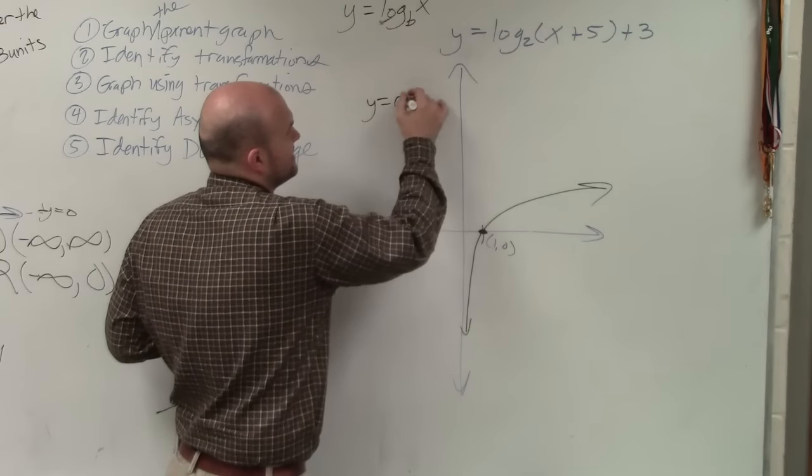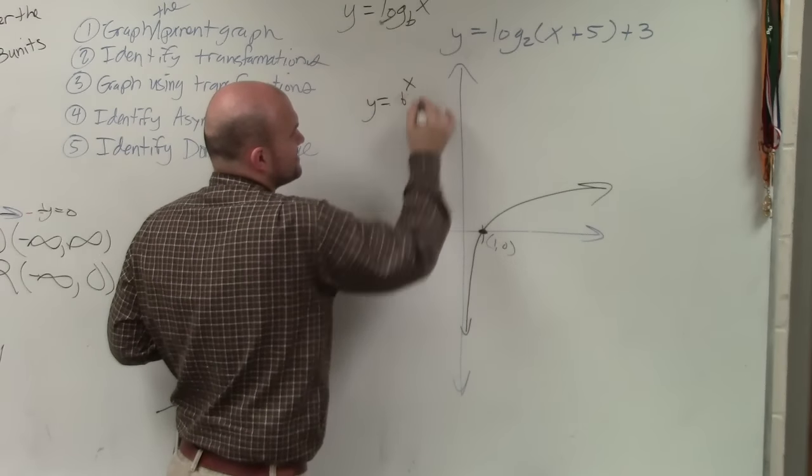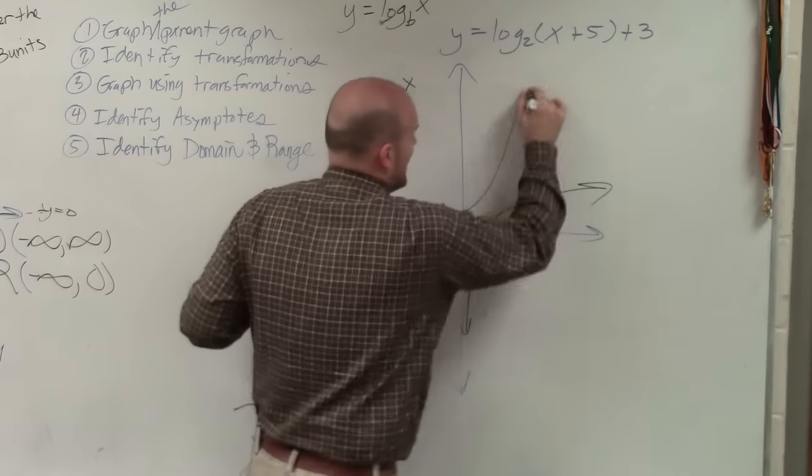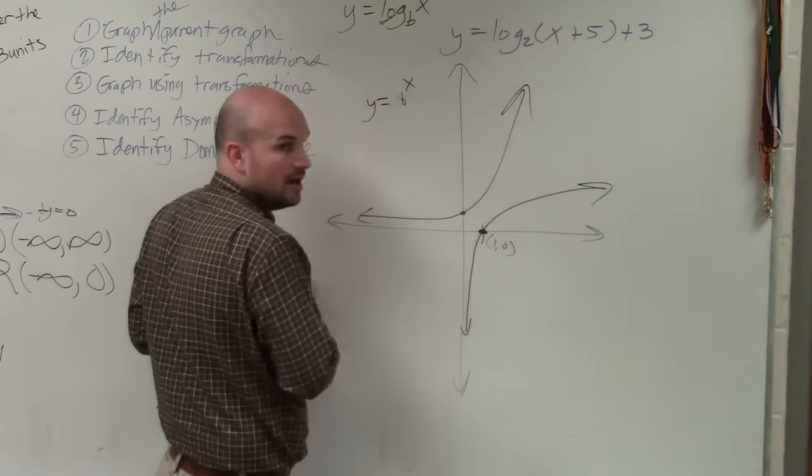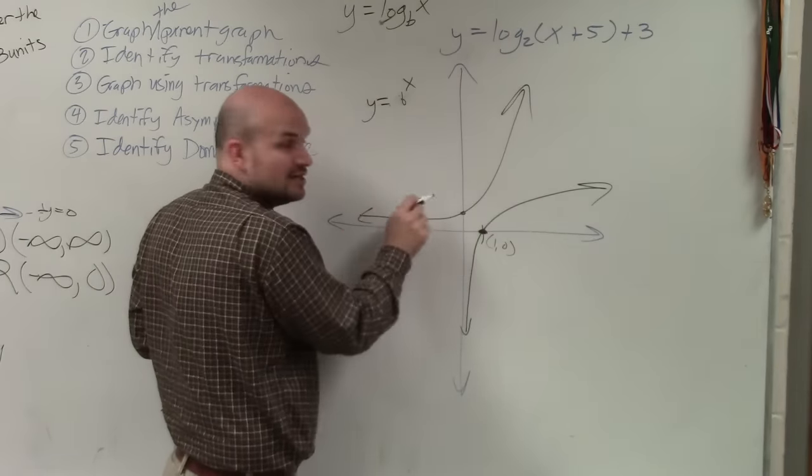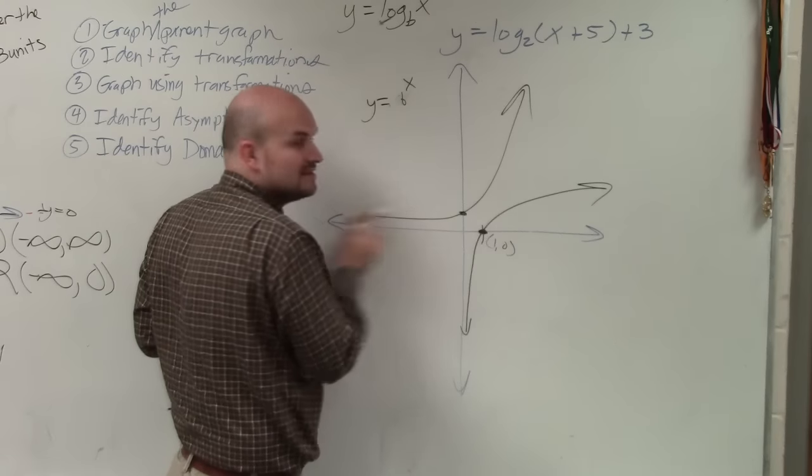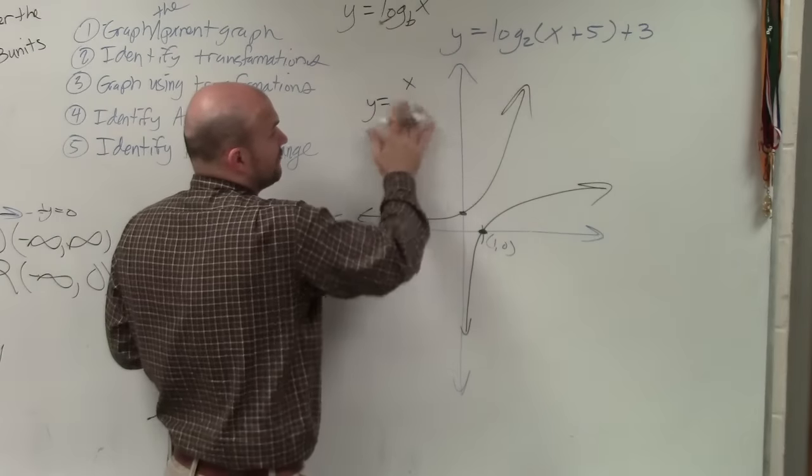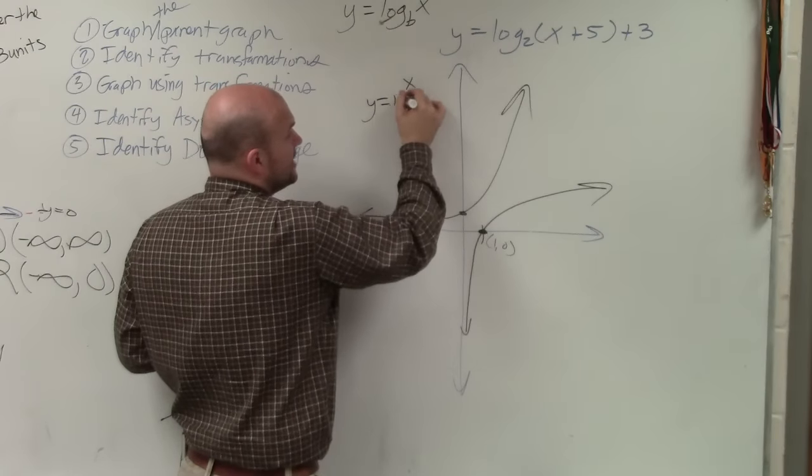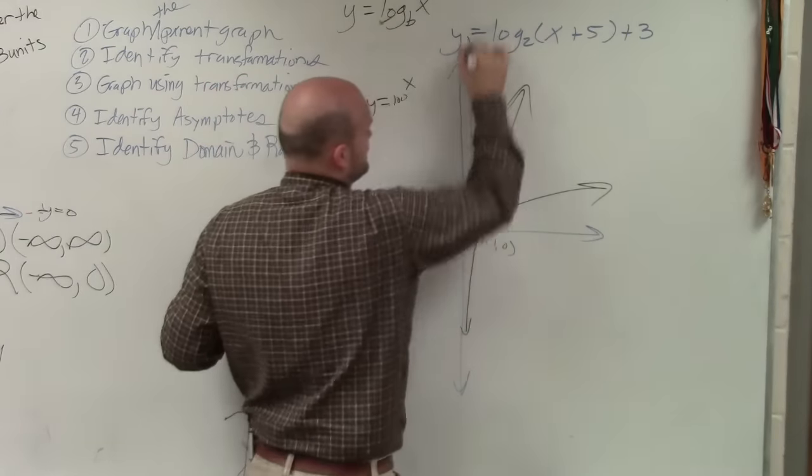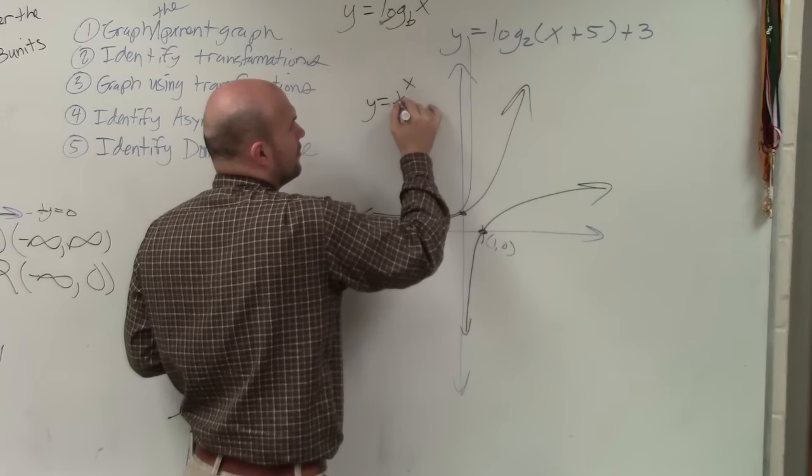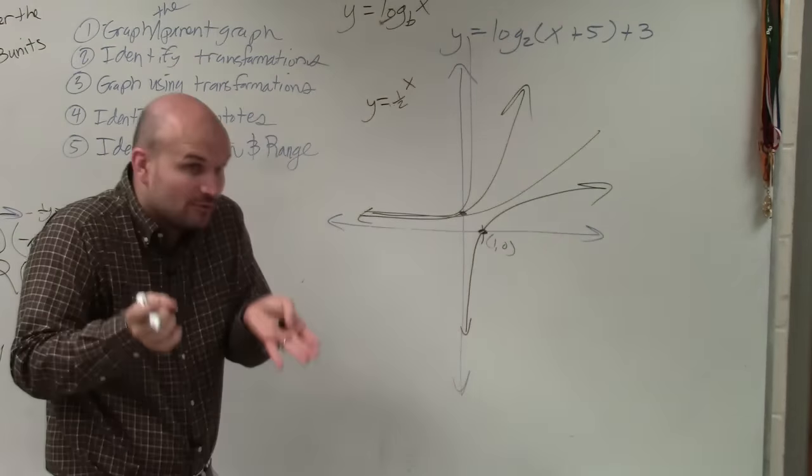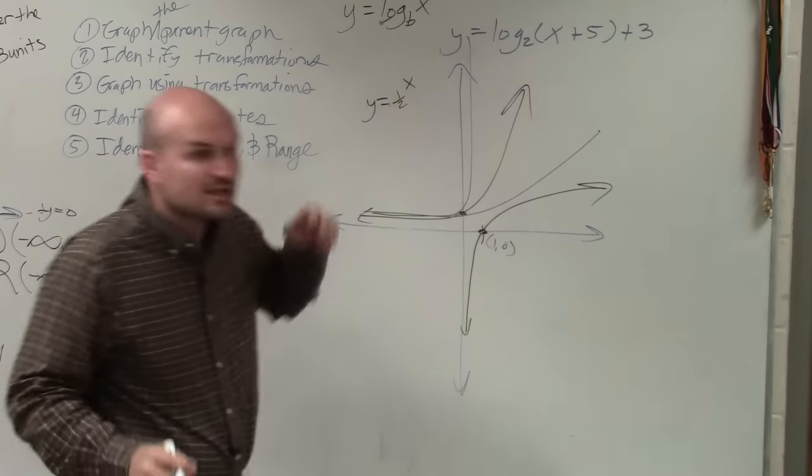If I said y equals b to the x, that graph always looks like this. Always. It's never going to cross at a different value. However, the shape of it could be different. Like, for instance, if I say this is 100, then the graph's going to go like this. If I say that's 1.5, then the graph's going to go like that. So the shape of it will be different, but it's always going to cross at (0,1).